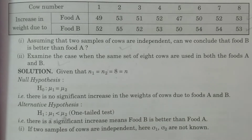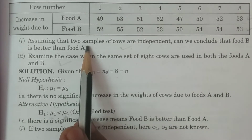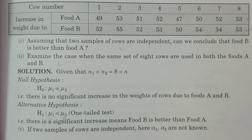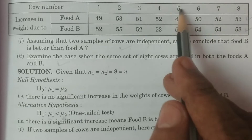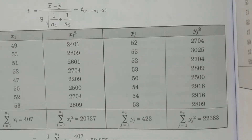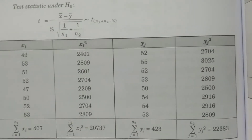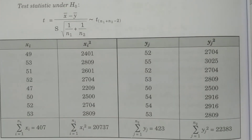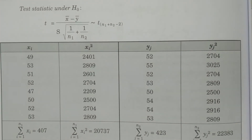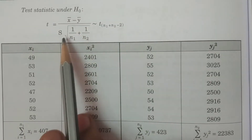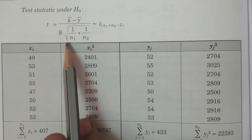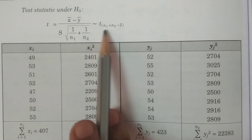For the first question, the two sample causes are independent, and sigma1 and sigma2 are not known. The test statistic under H0 is: T equals X-bar minus Y-bar divided by capital S times the square root of (1/N1 plus 1/N2), which follows a t-distribution with N1 plus N2 minus 2 degrees of freedom.